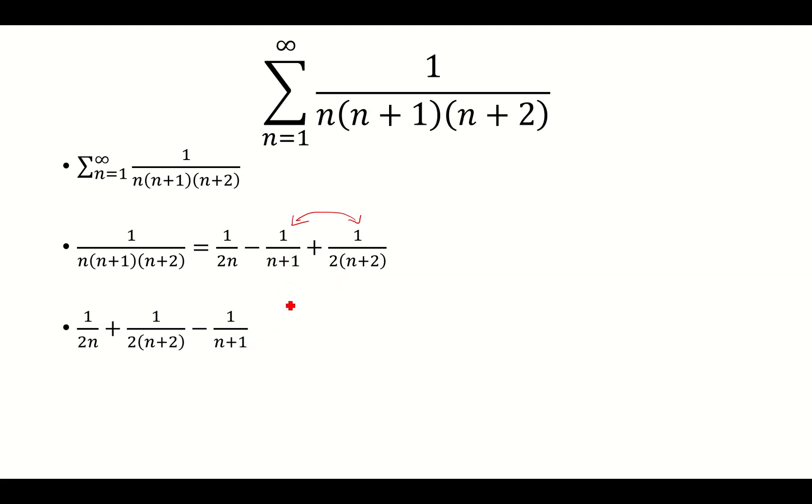And then we're going to rewrite this. So 1 over 2 times n plus 2 can be rewritten as 1 over n plus 2 minus 1 over 2 times n plus 2.